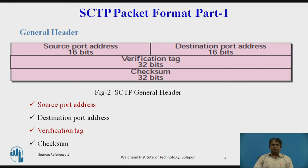There are four fields in the general header. Field one is source port address — a 16-bit field that defines the port number of the process sending the packet. The second field is destination port address — a 16-bit field that defines the port number of the process receiving the packet.